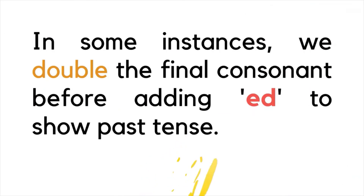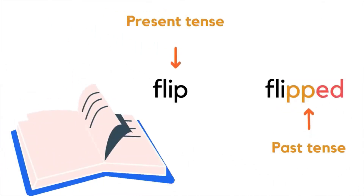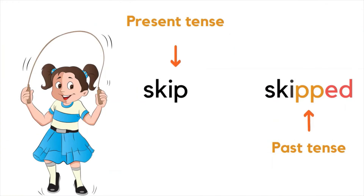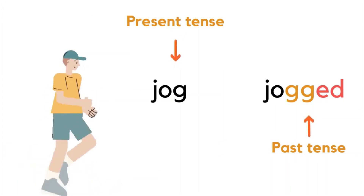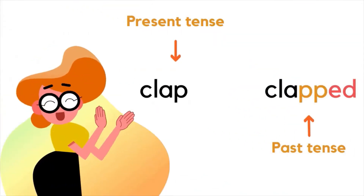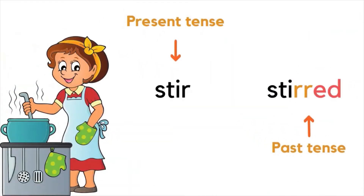In some instances, we double the final consonant before adding ED to show past tense. This is generally done when a one-syllable word ends with one vowel and one consonant. For example: slip / slipped, skip / skipped, jog / jogged, hug / hugged, clap / clapped, and stir / stirred.